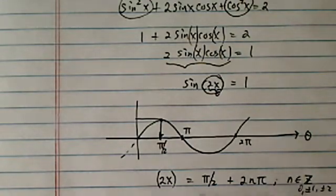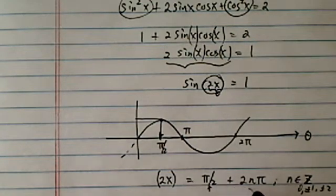Okay, so I'm going to divide it by 2 for both of them. You can't just divide it for this chunk. You've got to divide both of them. So then x, solution-wise, is equal to pi over 4 plus n pi.